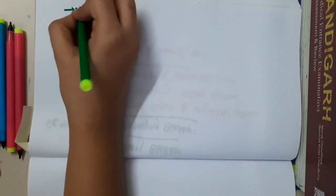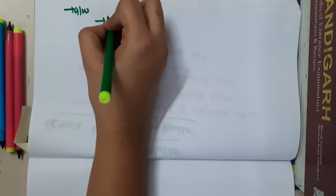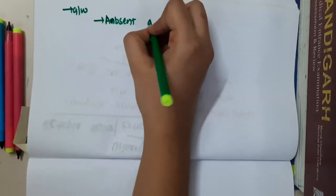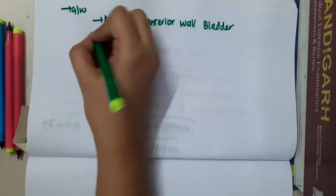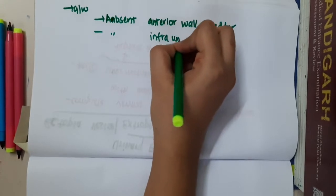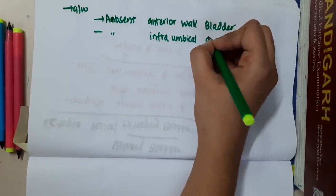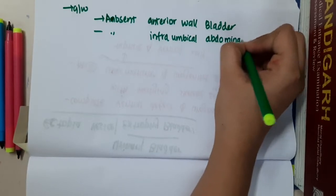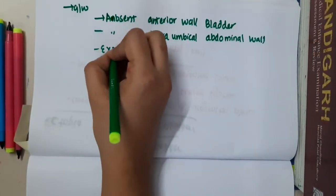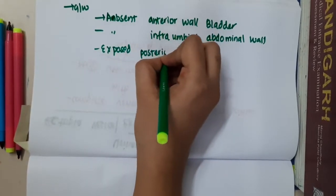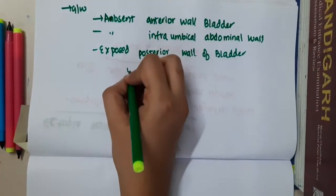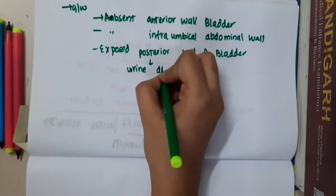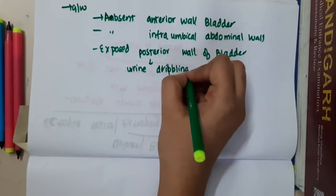Ectopia vesicae is associated with the following conditions: there is absent anterior wall of the bladder, absent infra-umbilical abdominal wall, and there will be an exposed posterior wall of the bladder through which urine is dribbling.